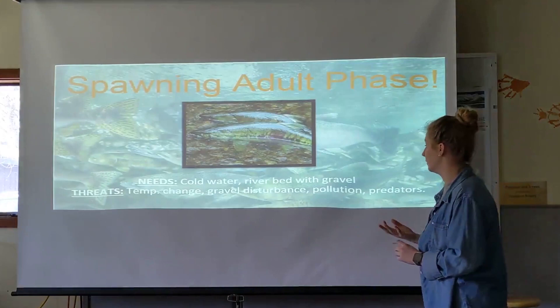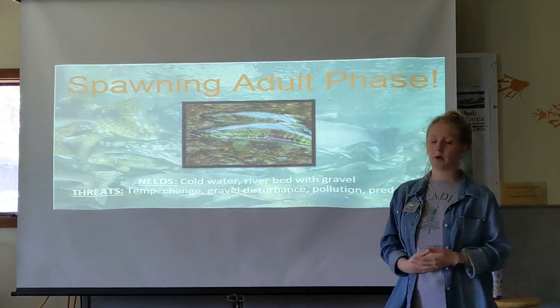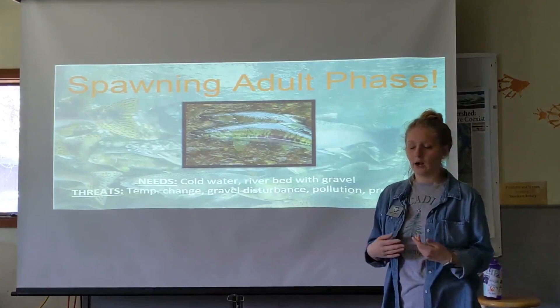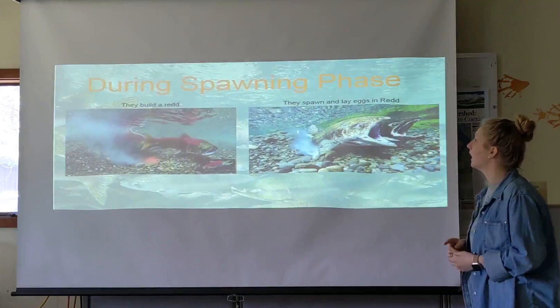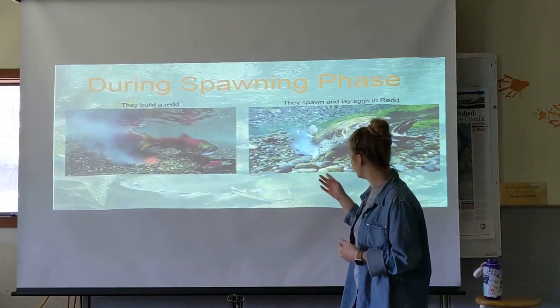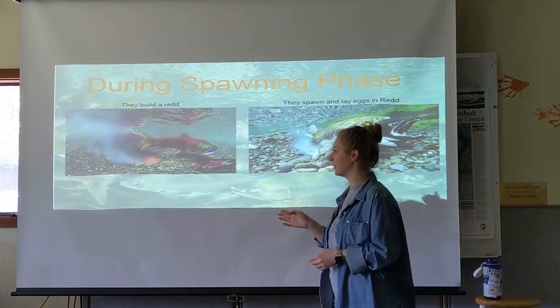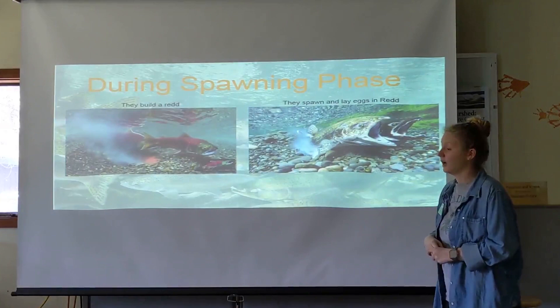During the spawning adult phase, salmon need cold water and a riverbed with gravel. Threats include temperature change, gravel disturbance, pollution, and predators. In the spawning phase they are older and not as fast-moving, making them easy targets for eagles or seagulls near the rivers. During the spawning stage they will build a redd — finding a good rocky area and using their tail fin like a broom to sweep it clean, making sure it's a safe place to lay their eggs, then spawning in that area.